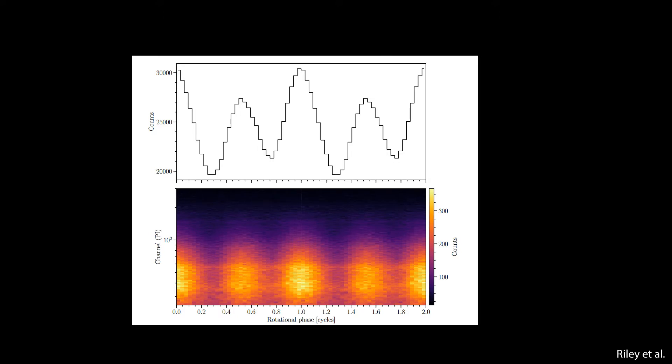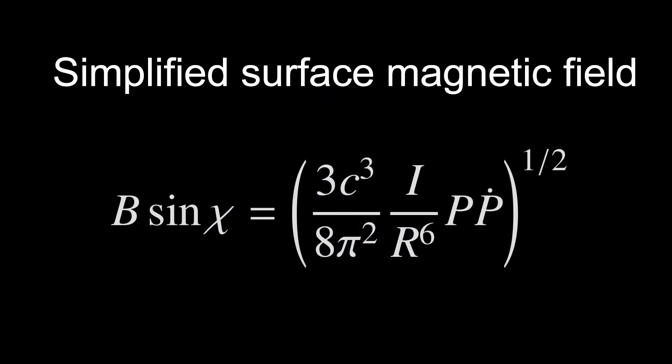These estimates relied on the assumption that the pulsar's magnetic field has a dipole structure. However, none of the models could explain all of the features of the observed emissions.